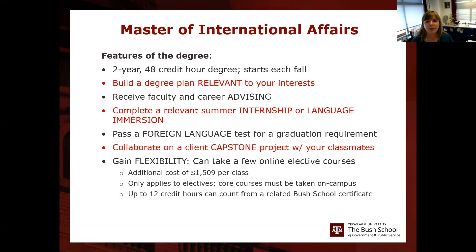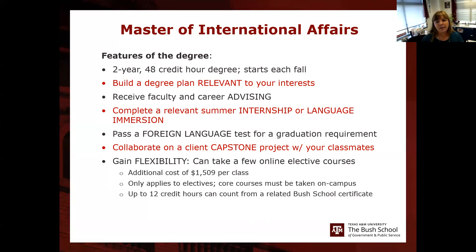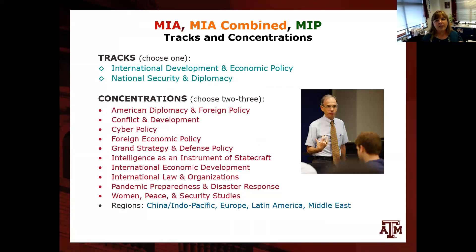In the final semester you collaborate on a client capstone project with your classmates. You can take a few online elective courses, but that costs an additional $1,500 per class, so most students take courses on campus in College Station. Core courses must be taken on campus. You can transfer up to 12 credit hours that double-count for both a certificate and the master's degree. The two tracks offered here in College Station are International Development and Economic Policy, and National Security and Diplomacy.